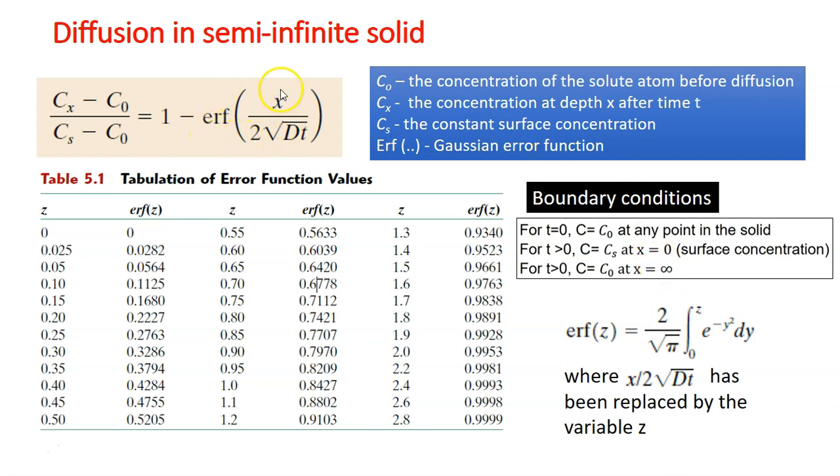So this part here, the Gaussian error function is just ERF in the bracket Z, and they are just values which are given in this mathematical tables for various functions. So, X over 2DT square root values. So, we have here the value of Z and the value of the error function.